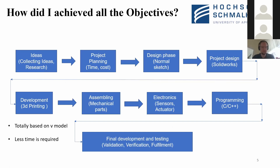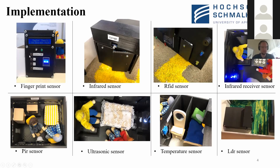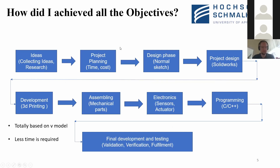Now the question is how it was possible for me to achieve all these objectives from scratch to a proper prototype. First, I researched the web, gathered ideas, and went to Professor Frank Shoulder to discuss. We sorted out eight ideas to implement. Then in the project planning phase, I calculated time and cost — completing the thesis quickly was important, so I planned carefully.